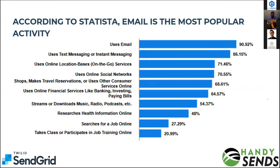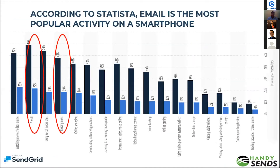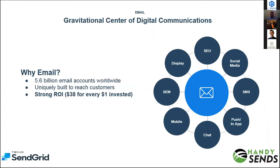According to statistics, email is the most widely used platform. Around 90% of people use email from smartphones, 59% of people read emails, and around 48% do so through mobile. There are 5.6 billion email accounts worldwide — more than 50% of people use email. It is uniquely built to reach customers, and businesses have been reaching customers via email earlier than SMS or WhatsApp, and still everyone sends emails today.